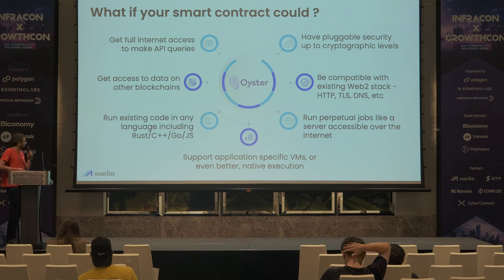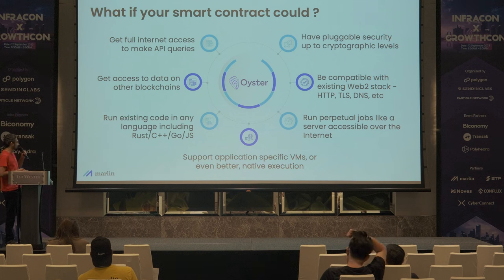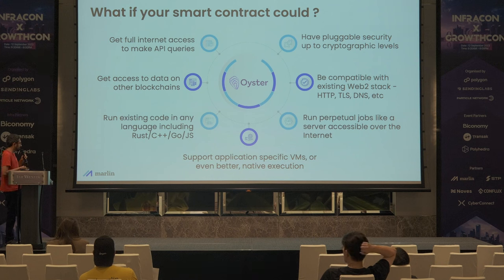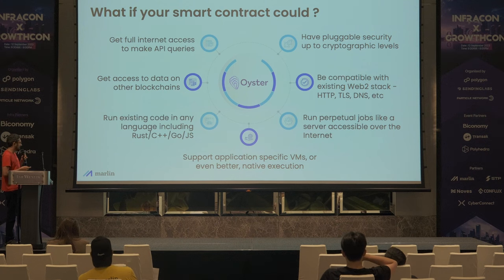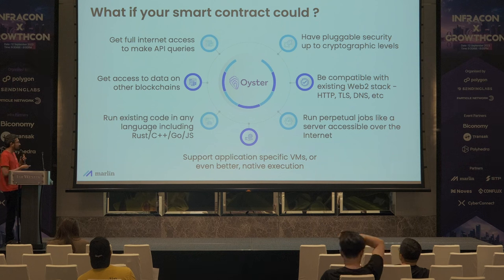So let's think of what we have today. What if my smart contract could get internet access and make API queries from external services? What if I could get access to data that's on other blockchains? What if I could run better VMs than the EVM, making it more efficient? And how can I run services directly accessible by users through the internet, especially if they are compatible with existing browsers and existing ETL tools? And how do I support privacy so apps can make the right choices?